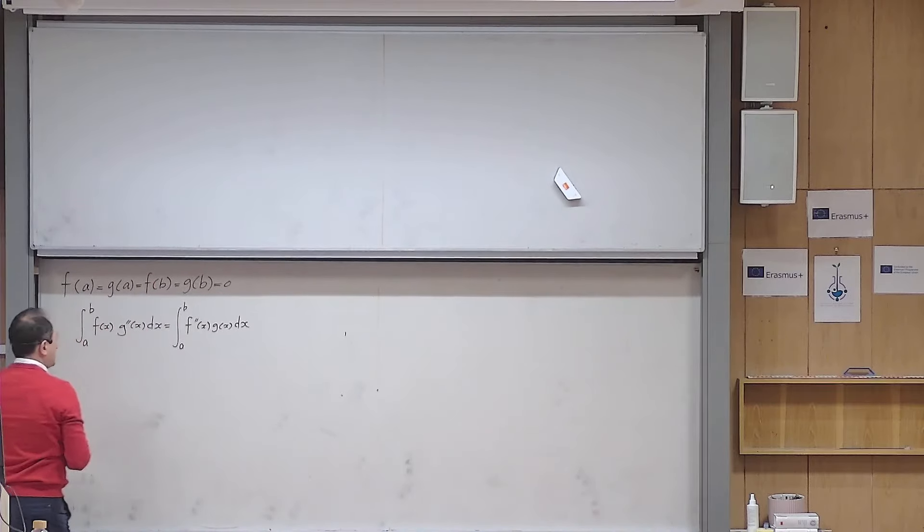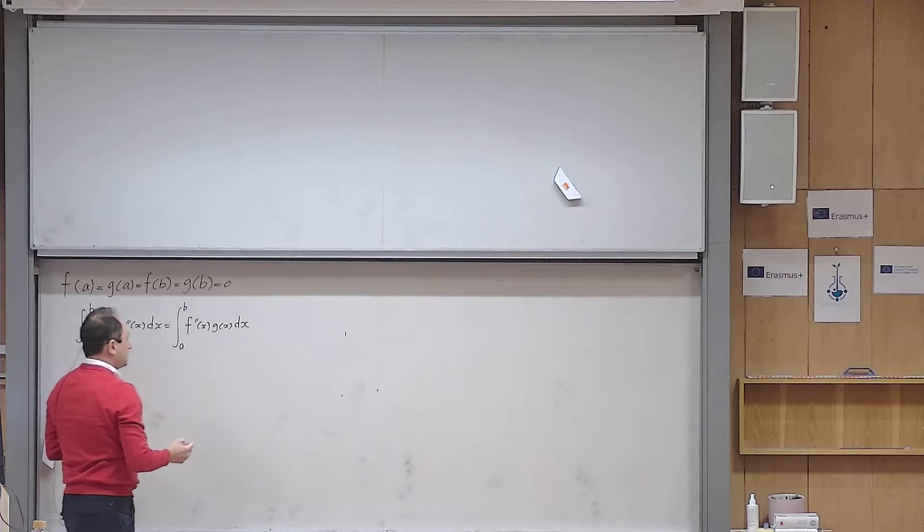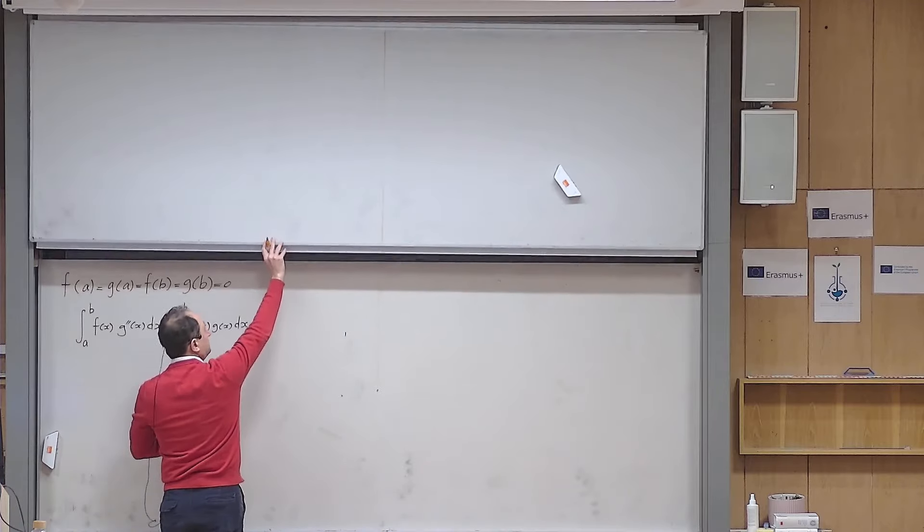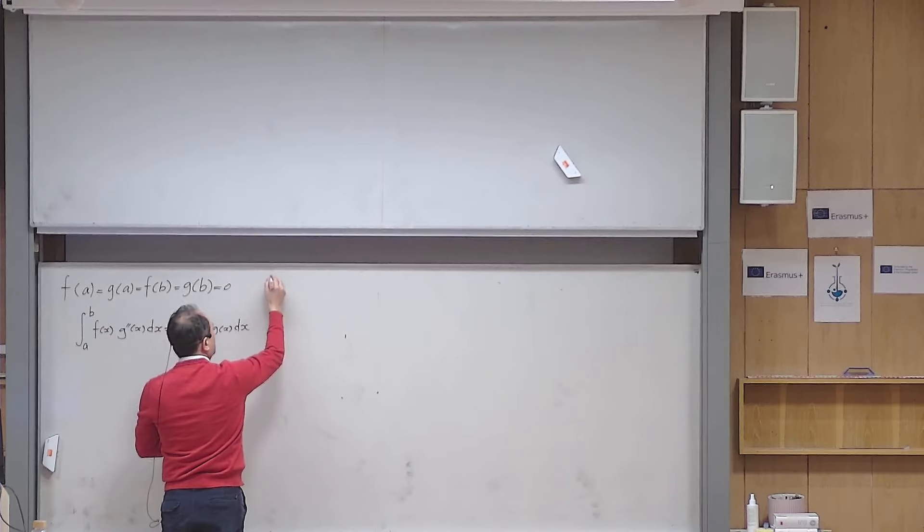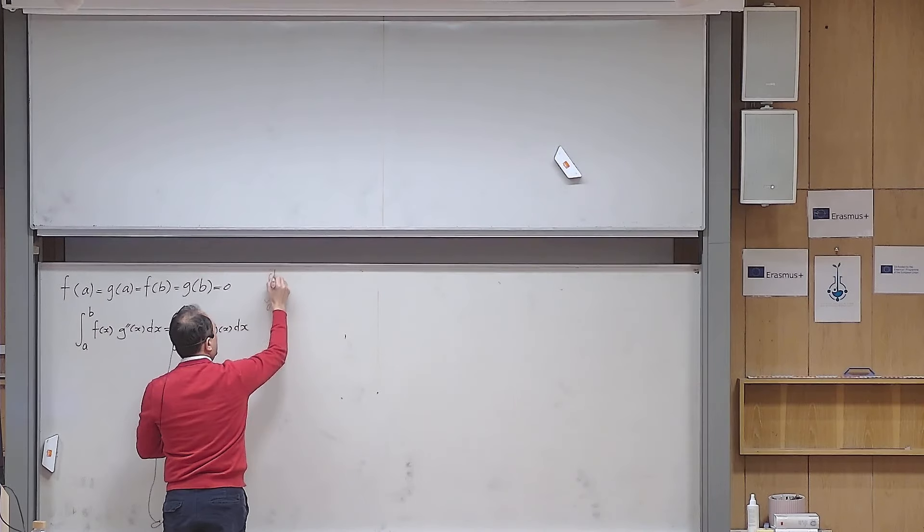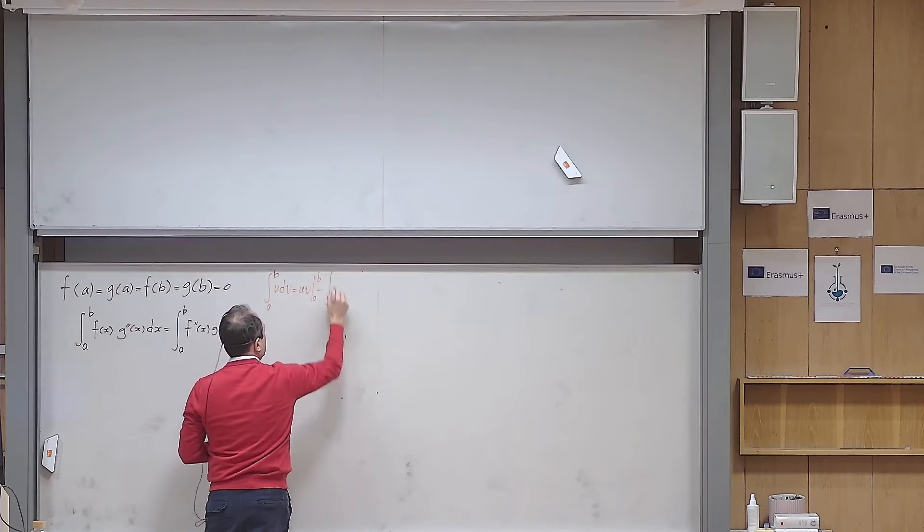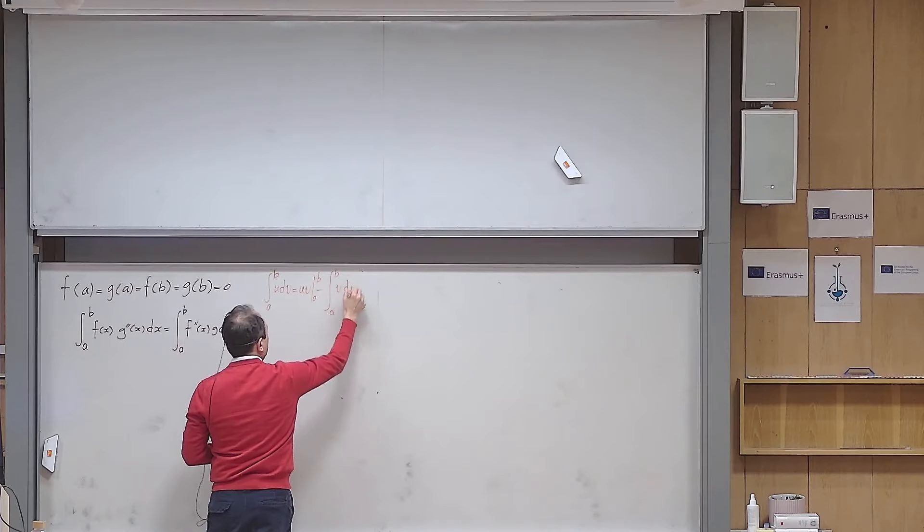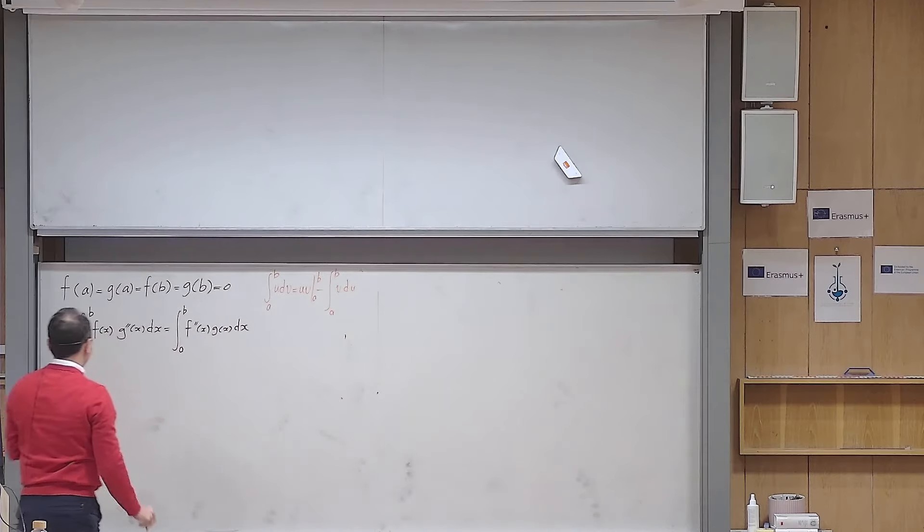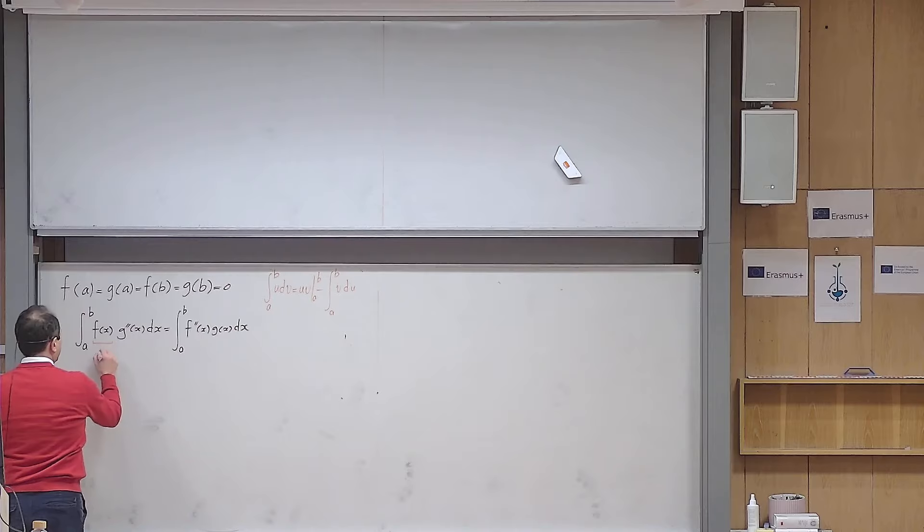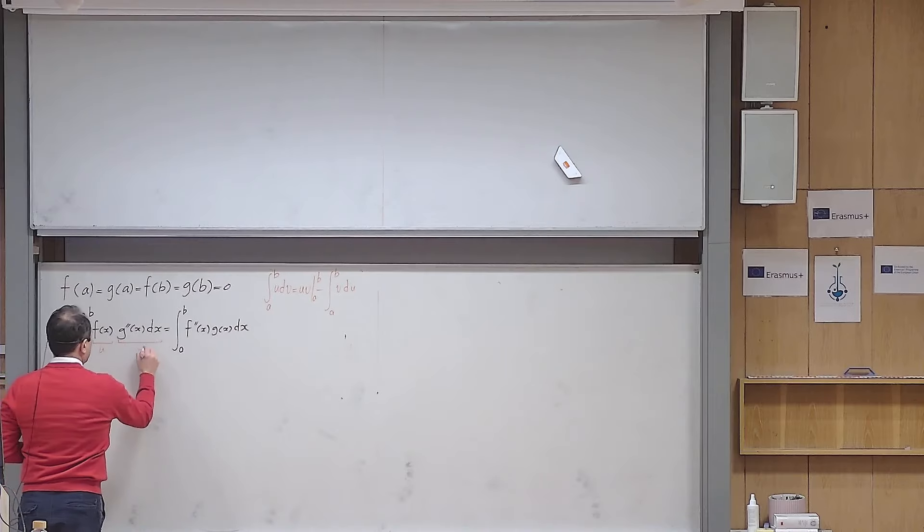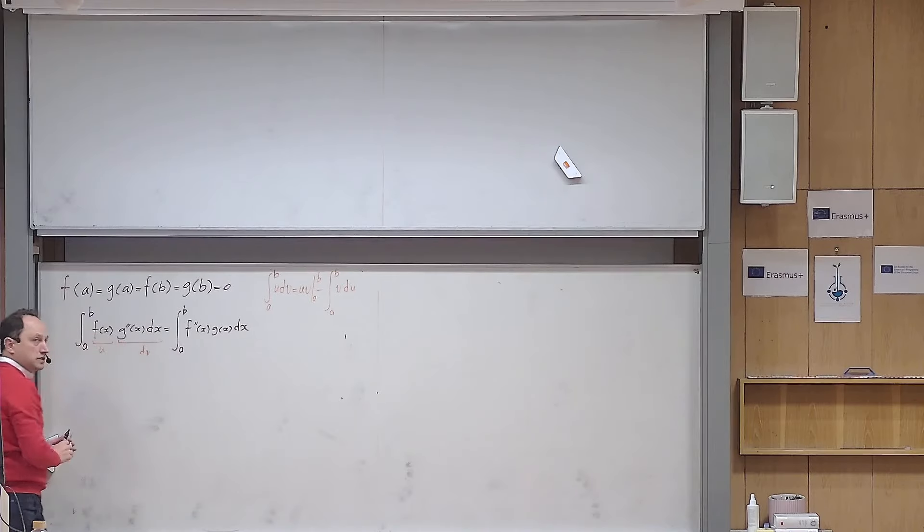Let me start from the left hand side. I want to use integration by parts. So that's the formula: integral from a to b of u dv equals uv from a to b minus integral from a to b of v du. In this problem, I will take this one to be u and I will take this part to be dv.